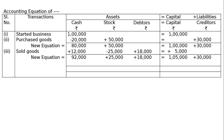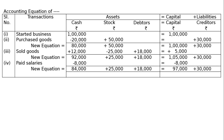The fourth transaction: paid salary ₹8,000. Salary is an expenditure, so it reduces both cash and capital. Deduct ₹8,000 from cash and ₹8,000 from capital. The final equation is: cash ₹84,000, stock ₹25,000, debtors ₹18,000, capital ₹97,000, and creditors ₹30,000.